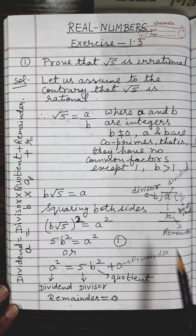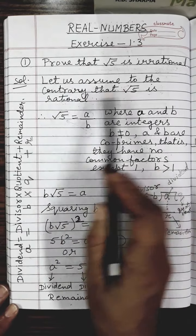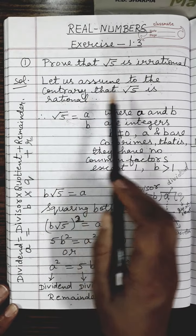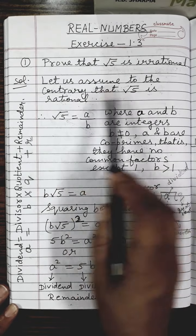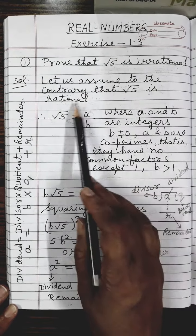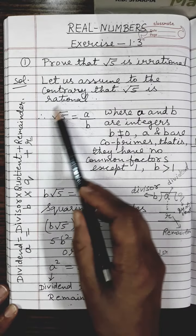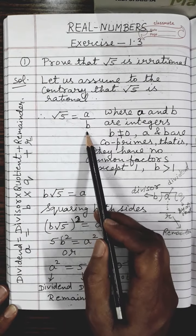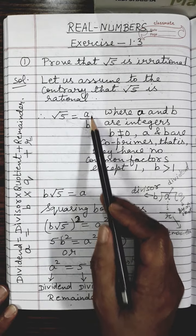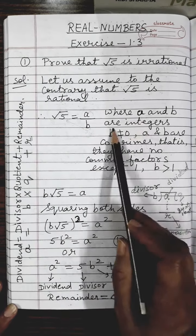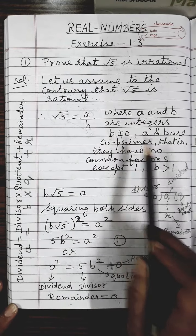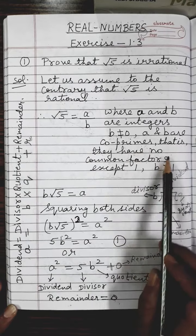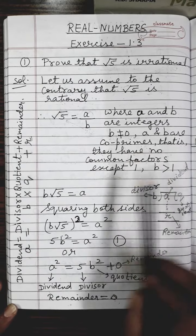So let us start our solution. Let us assume to the contrary — contrary means by contradiction method — that root 5 is rational. If root 5 is rational, I can write root 5 in the form of a rational number a upon b, where a and b are integers, b is not equal to 0, and a and b are co-primes. That is, they have no common factors except 1.